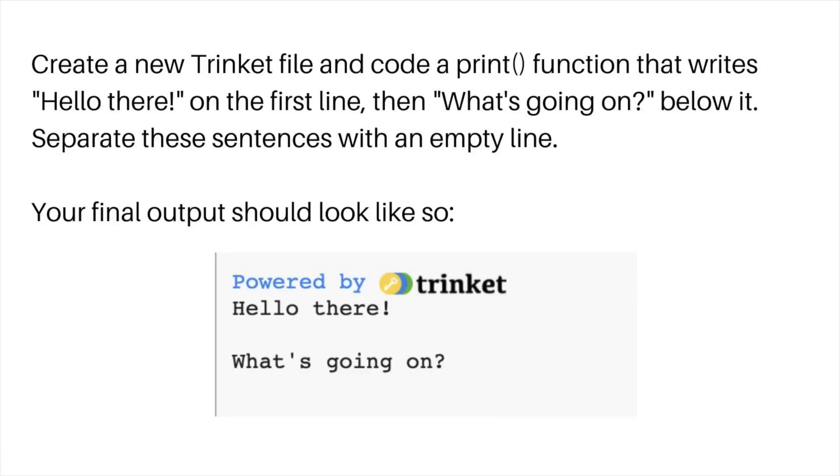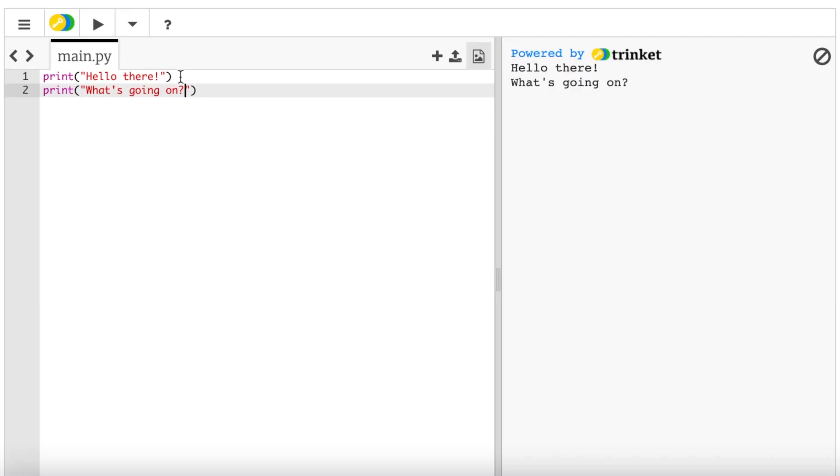If we reread the problem, it says separate these sentences with an empty line. How do we do that? As we covered before, we need to place an empty print statement in between. And when we run it, as you can see, our lines are then separated.